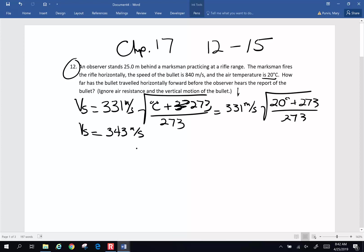Now here's the physical setup of the problem. We have our marksman who is going to be shooting the rifle, and the bullet is going to travel forward some distance. Behind this person is going to be the observer, and the question is, how far has the bullet traveled forward, so this is going to be the distance traveled by the bullet, that's what we want to know, before the observer actually hears the report of the bullet.